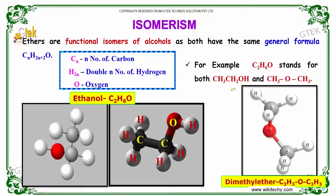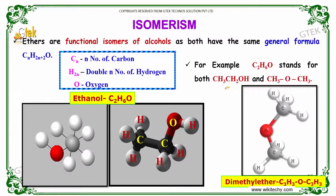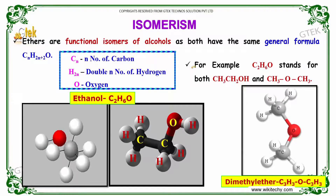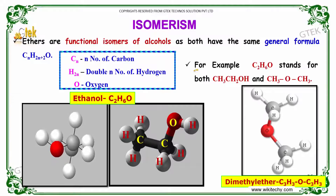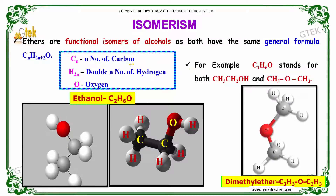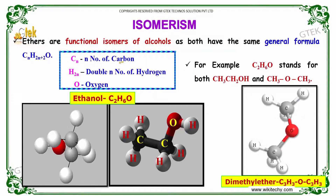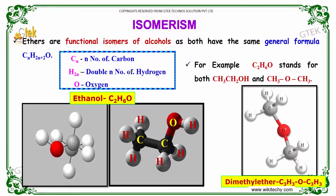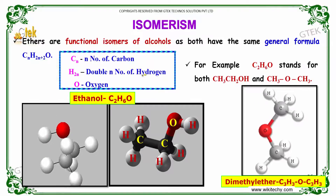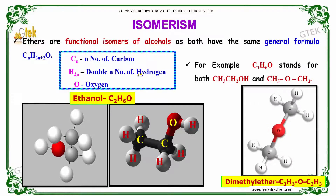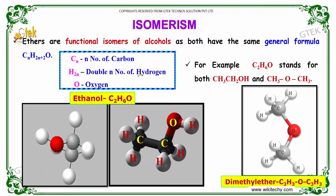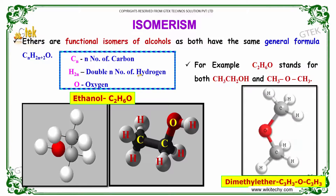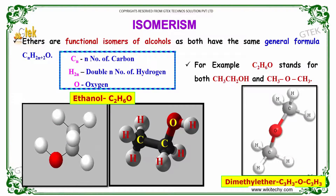Isomerism. Ethers are functional isomers of alcohols as both have the same general formula CnH2n+2O, where Cn denotes the number of carbons, H2n+2 the number of hydrogens, and O represents the oxygen. For example, C2H6O stands for both CH3CH2OH and CH3OCH3.